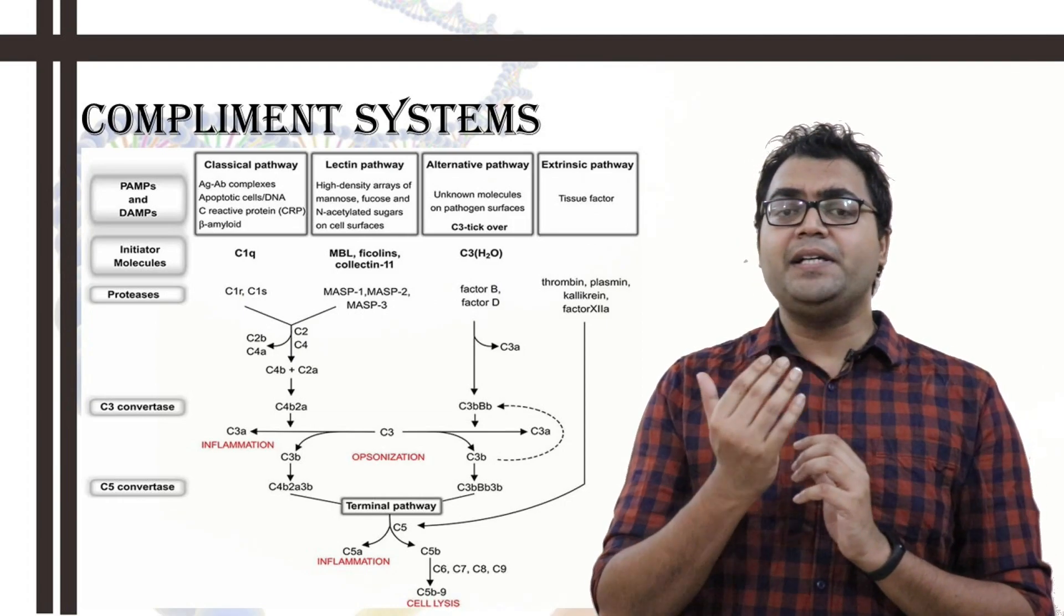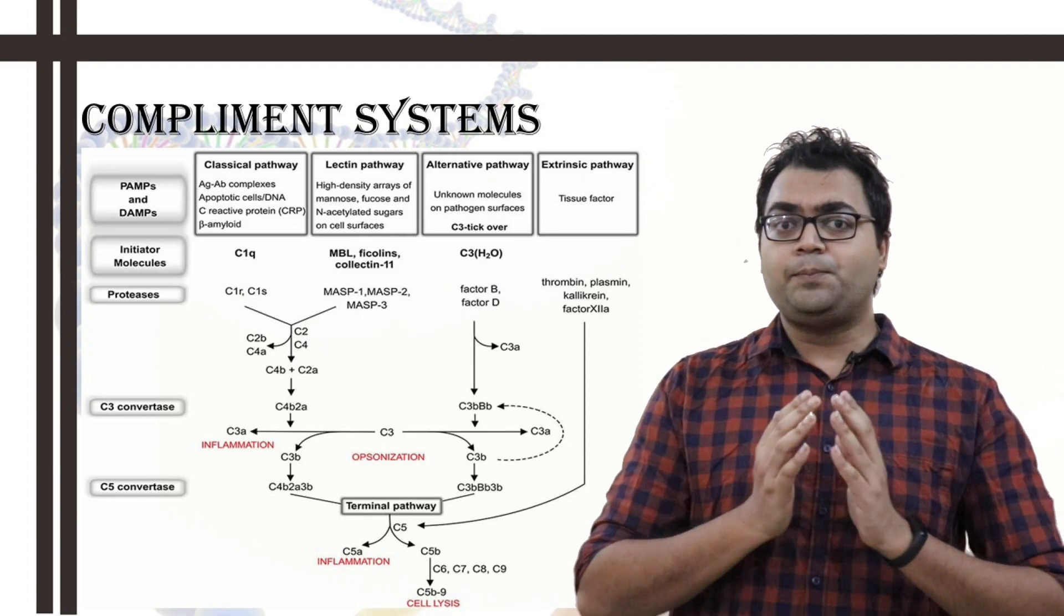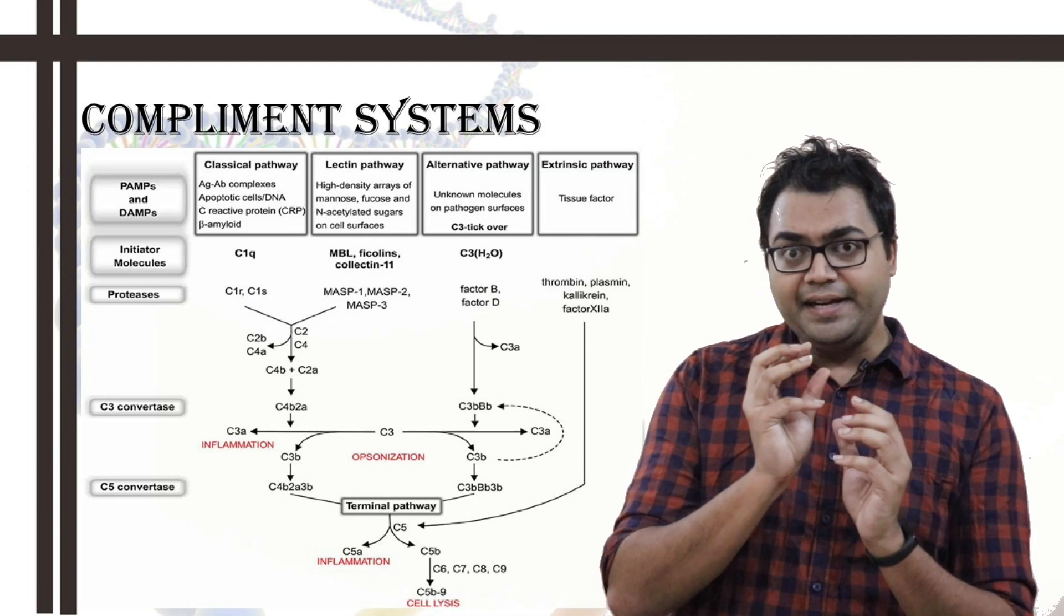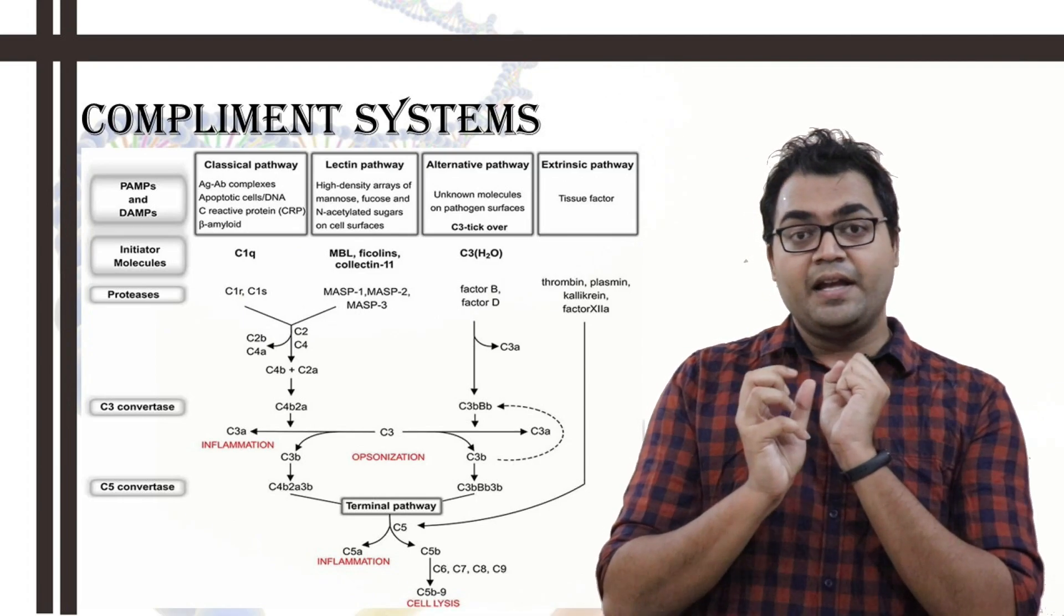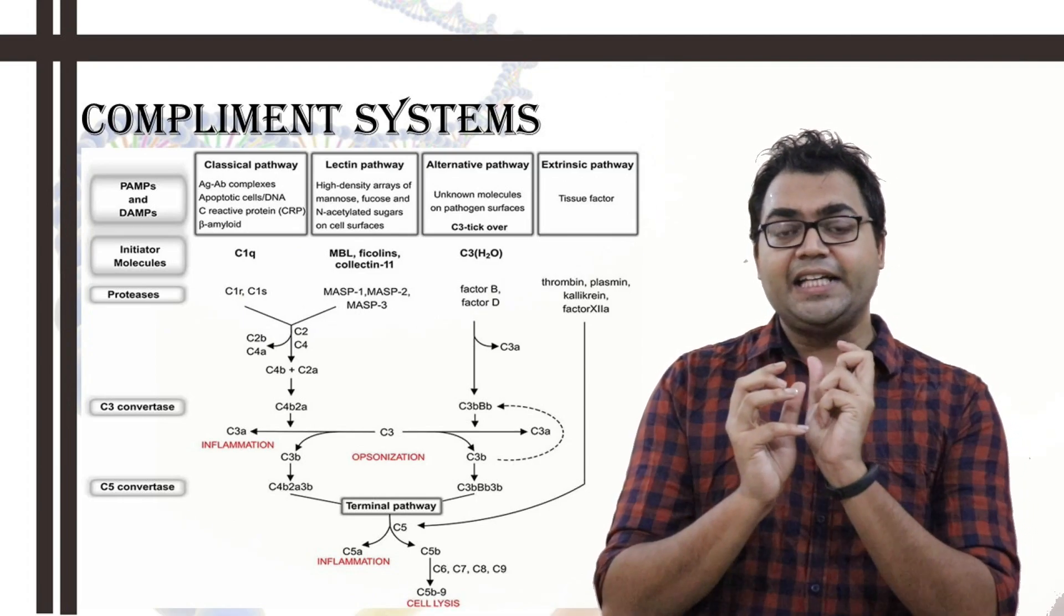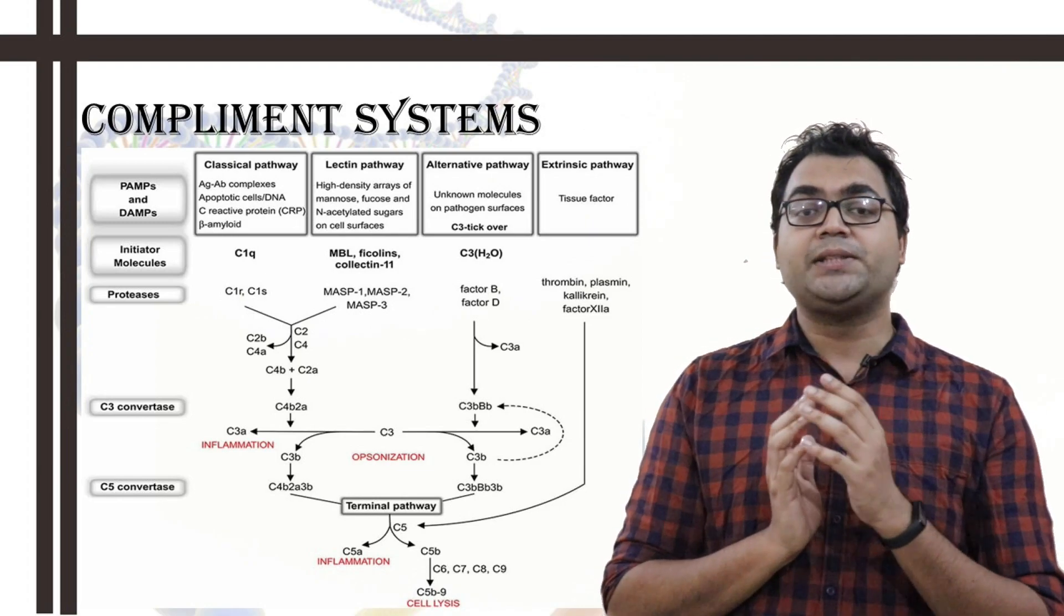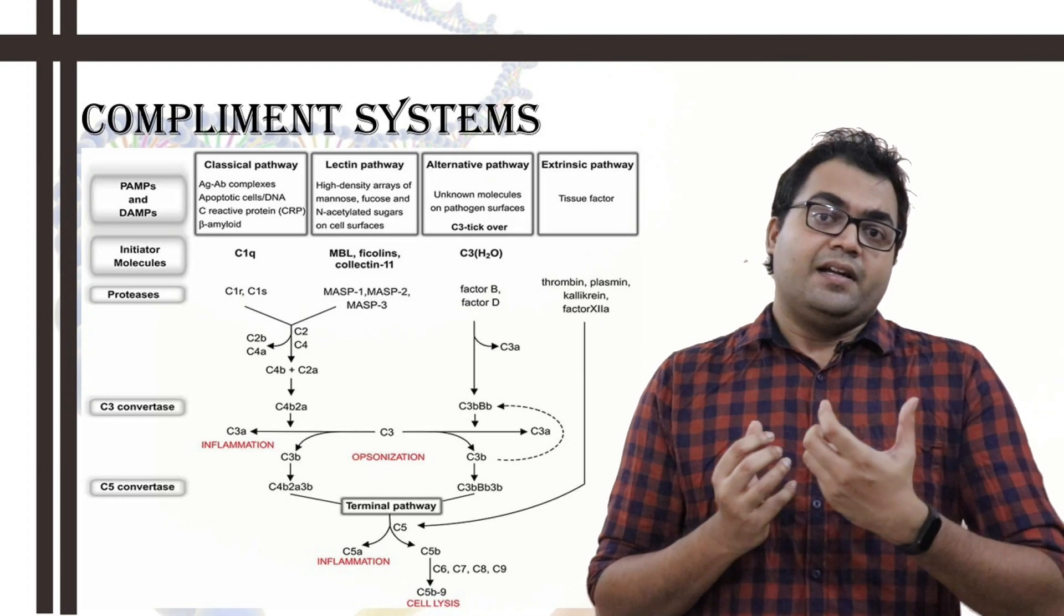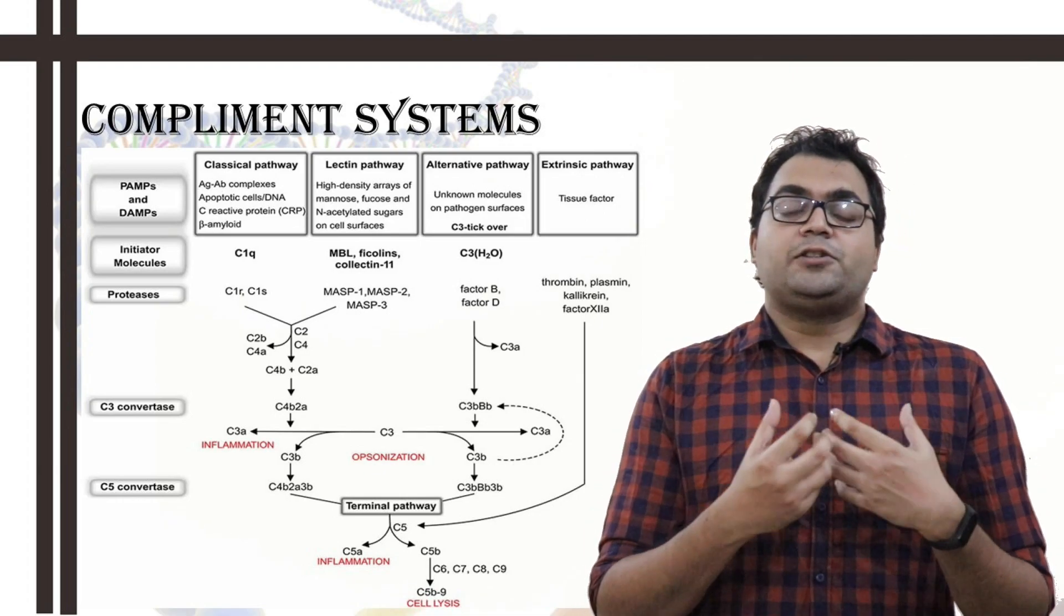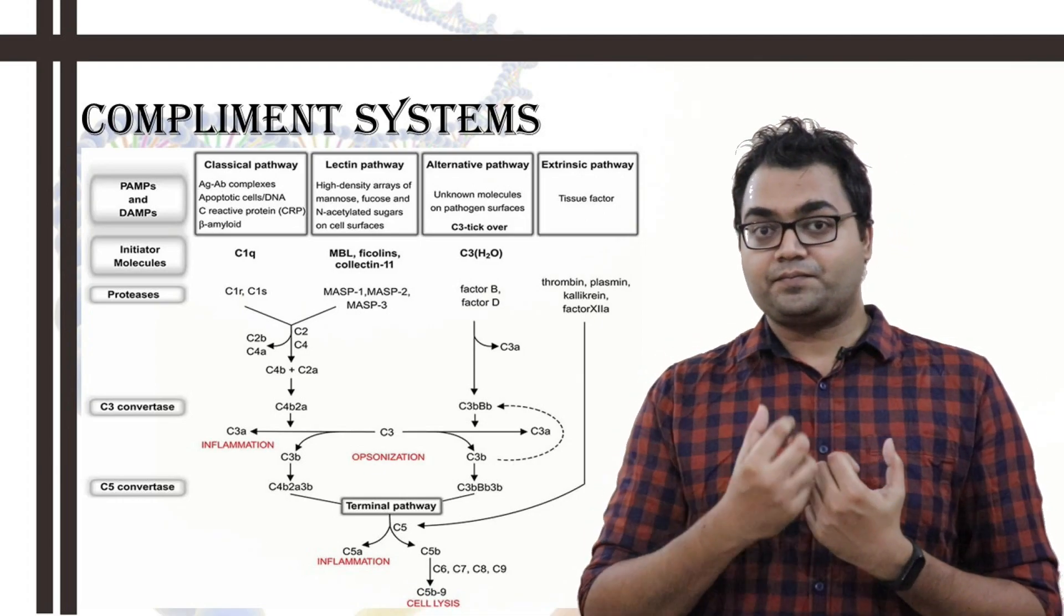Now, specifically, this conformational change leads to the exposing of the sites which can bind to the C1q, and C1q only gets activated when it binds to two such sites at a very close proximity. This is possible with a pentameric IgM or a dimerized or polymeric IgG.